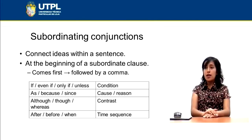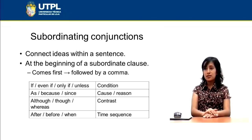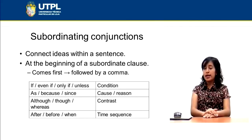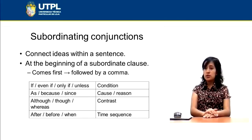Some examples of subordinating conjunctions are: 'if,' 'even if,' 'only if,' and 'unless' to show condition; 'as,' 'because,' or 'since' to express a cause or reason; 'although,' 'though,' or 'whereas' to show contrast; and 'after,' 'before,' or 'when' to show a time sequence.